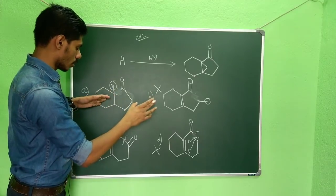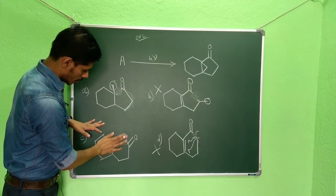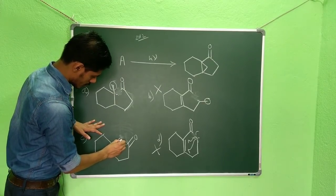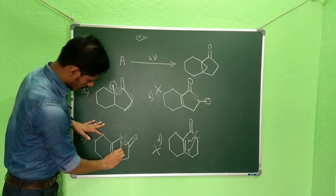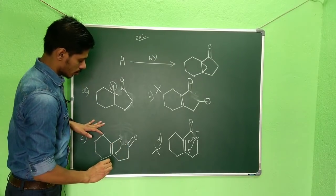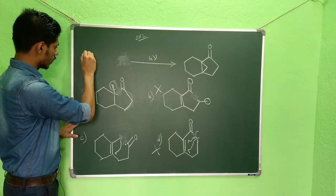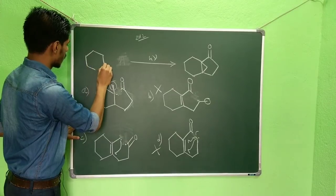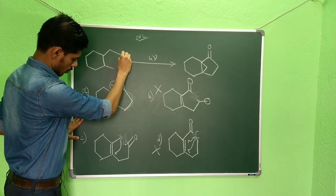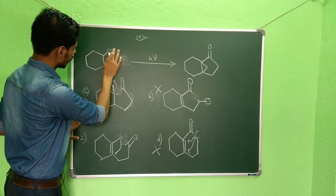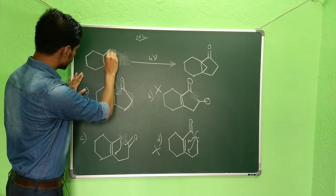Now you can see in this option, if the cleavage occurs like this, so then what can happen? So this dot can go here, so what it will give? It will give something like this. So here you can see, so actually this bond is broken, right? So we have this here, we have one dot.